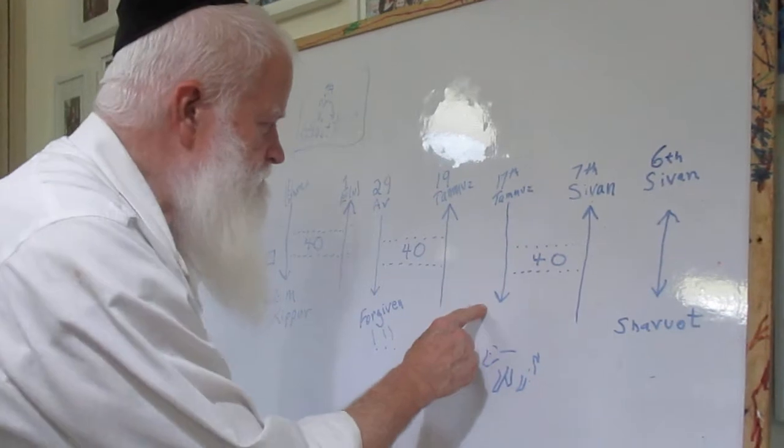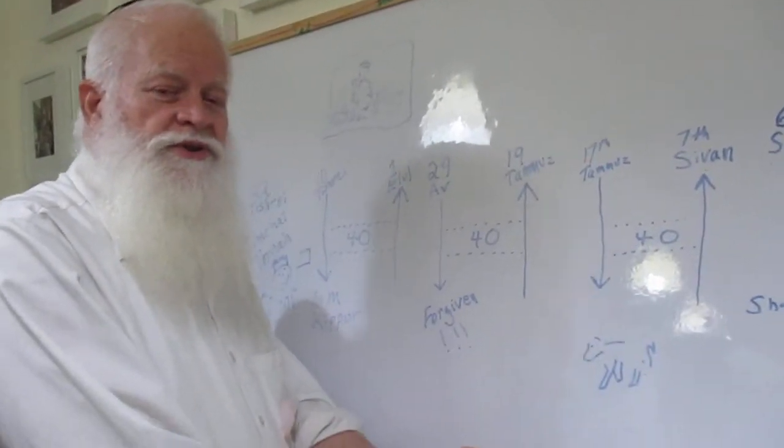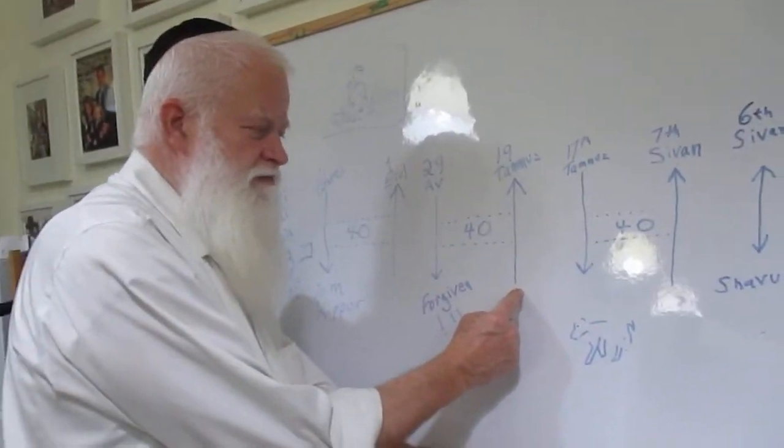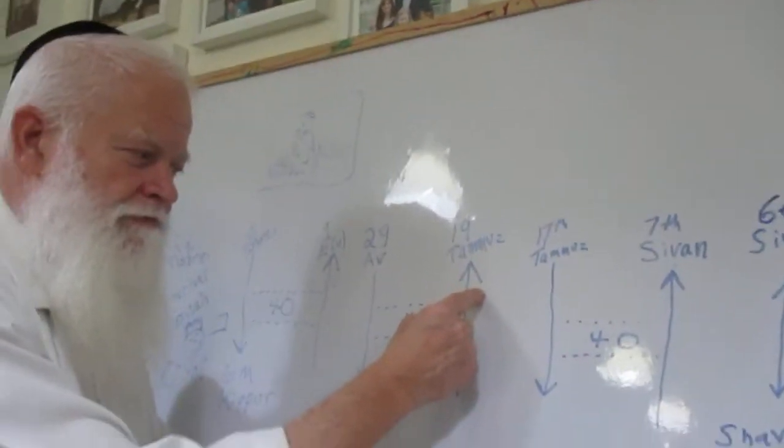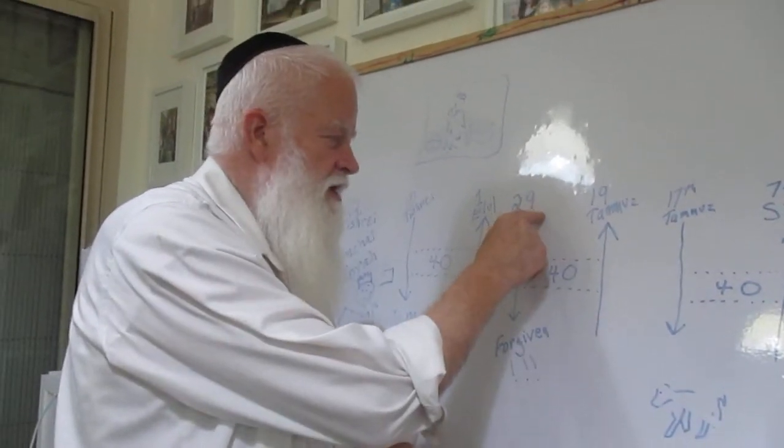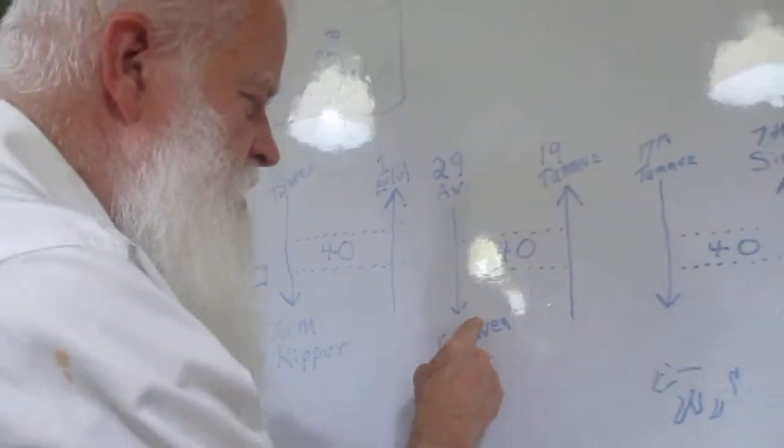Now he had to get Hashem to forgive the Jewish people. So on the 19th of Tammuz he went back up, stayed for another 40 days, and then came down on the 29th of Av and told the people that Hashem had forgiven them.